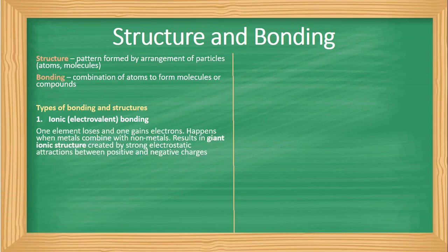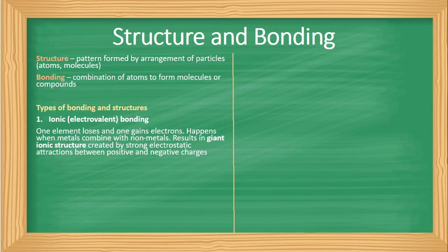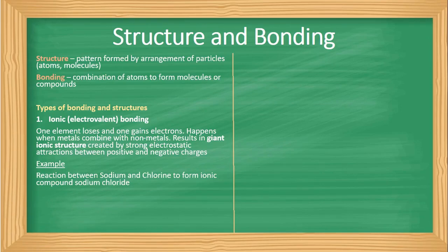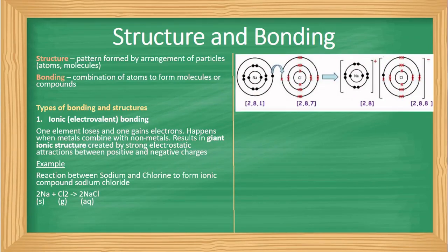Let us start with ionic bonding, also called electrovalent bonding. In this bonding, one element loses electrons and another one gains electrons. It happens commonly when metals combine with non-metals, resulting in a structure called giant ionic structure or giant electrovalent structure. This is created through strong electrostatic attractions between positive and negative charges. When a metal loses electrons it becomes a positive ion, and when a non-metal gains electrons it becomes a negative ion. An example is sodium and chlorine forming sodium chloride.